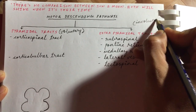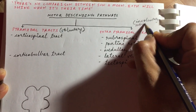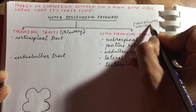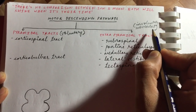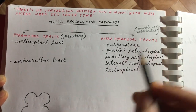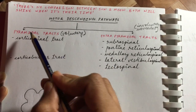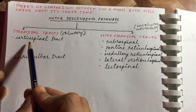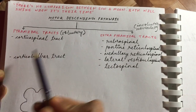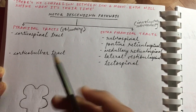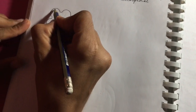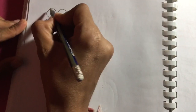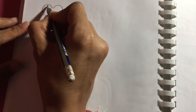Involuntary movements include reflexes, posture adjustments, and other movements. The main tracts in pyramidal tracts are the corticospinal tract and the corticobulbar tract.